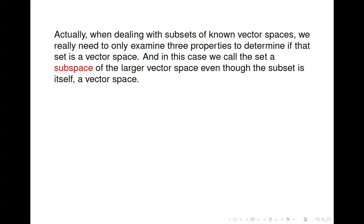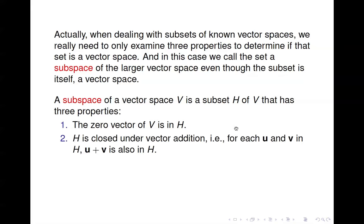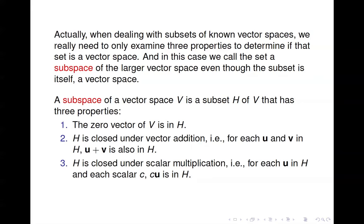When dealing with subsets of known vector spaces — just as S was a subset of R2 — we really only need to examine three properties to see if the set is a vector space. We typically call it a subspace of the larger vector space. A subspace of a vector space V is a subset H of V with three properties: the zero vector of V is in H; H is closed under vector addition; and H is closed under scalar multiplication. If we want to check whether a set is a subspace, we only need to check these three properties.